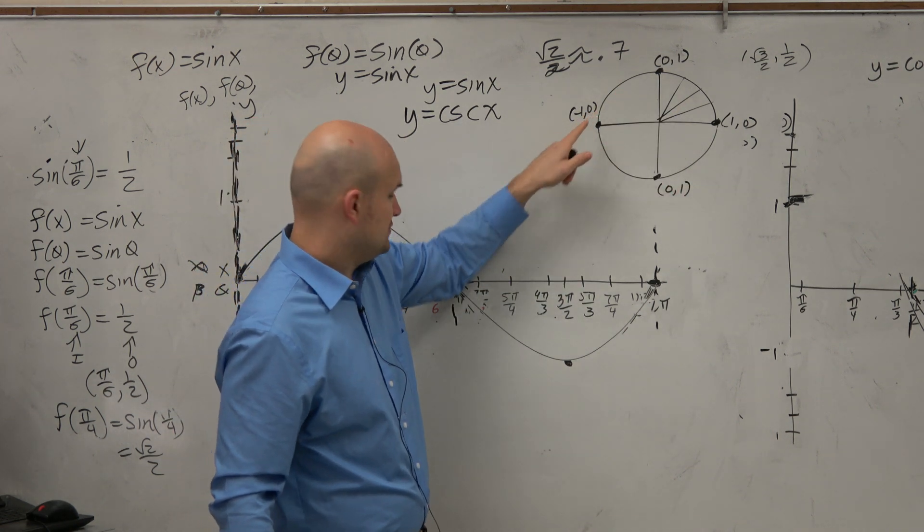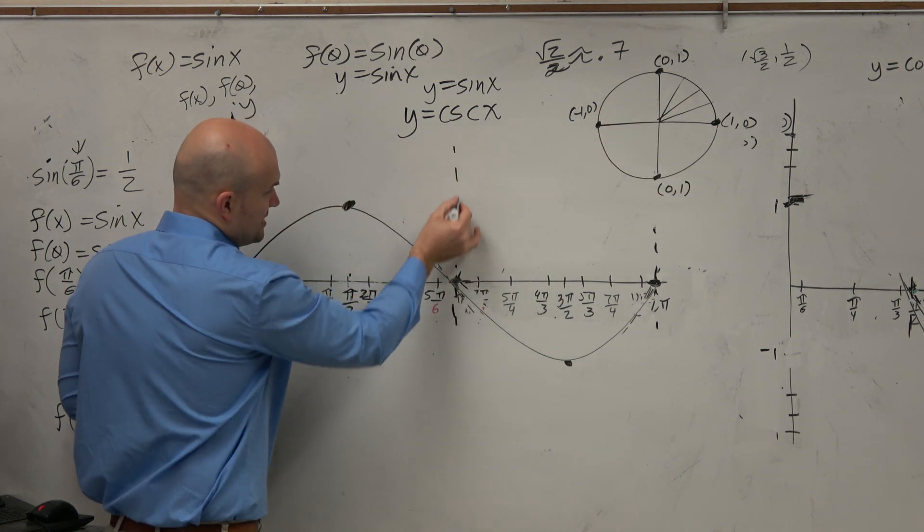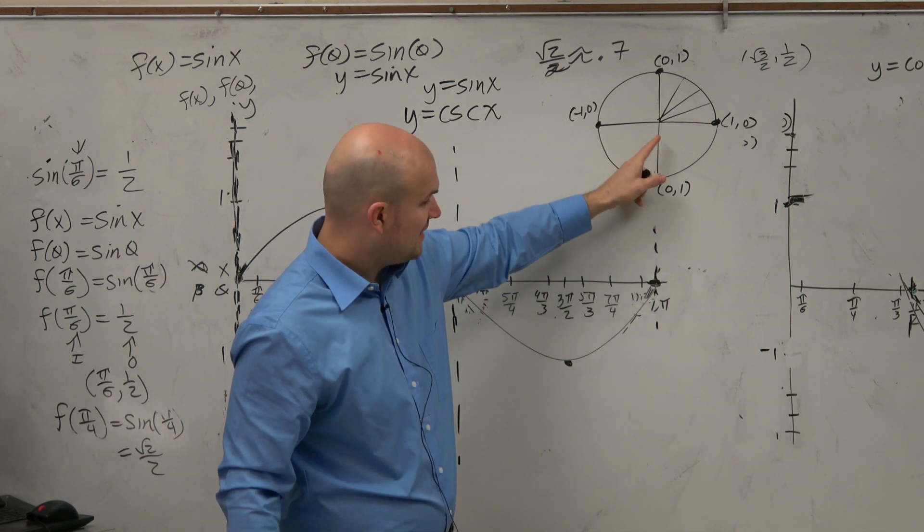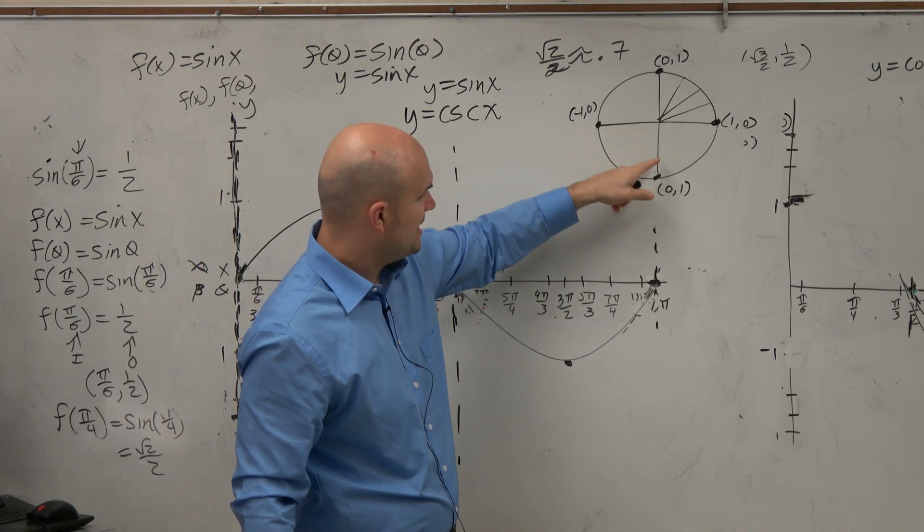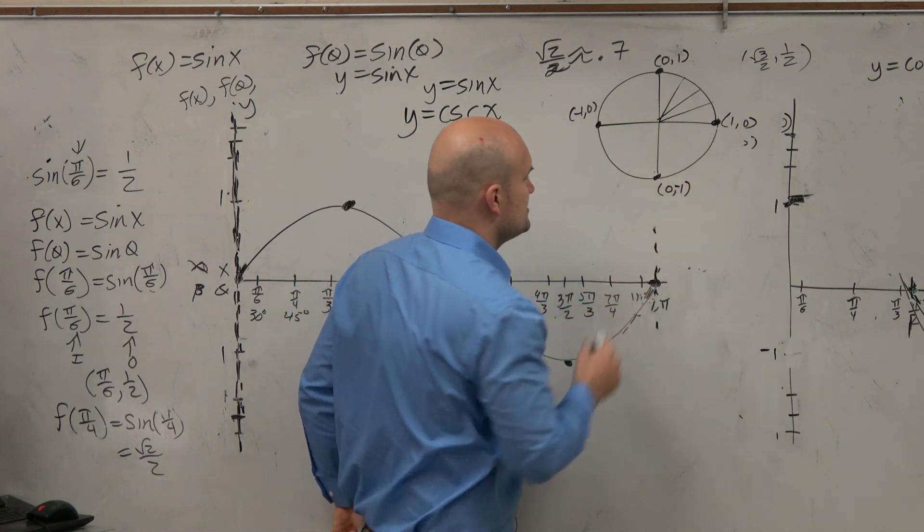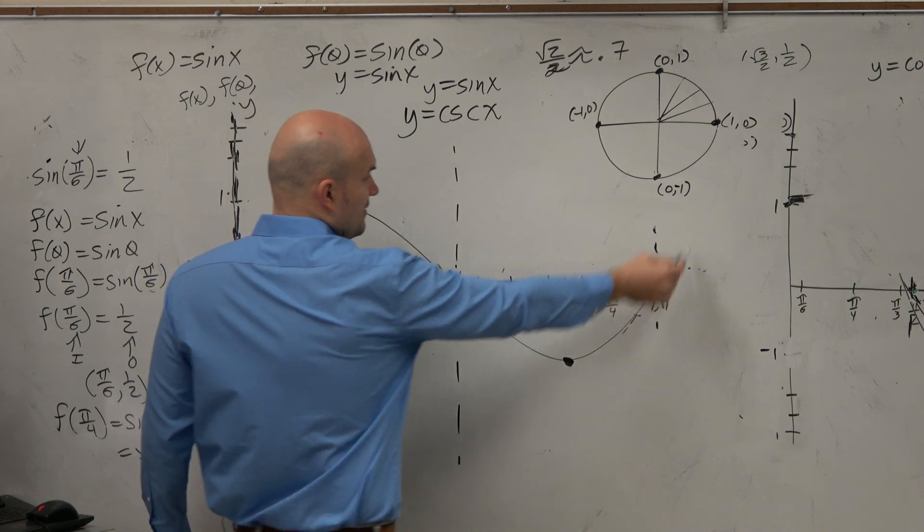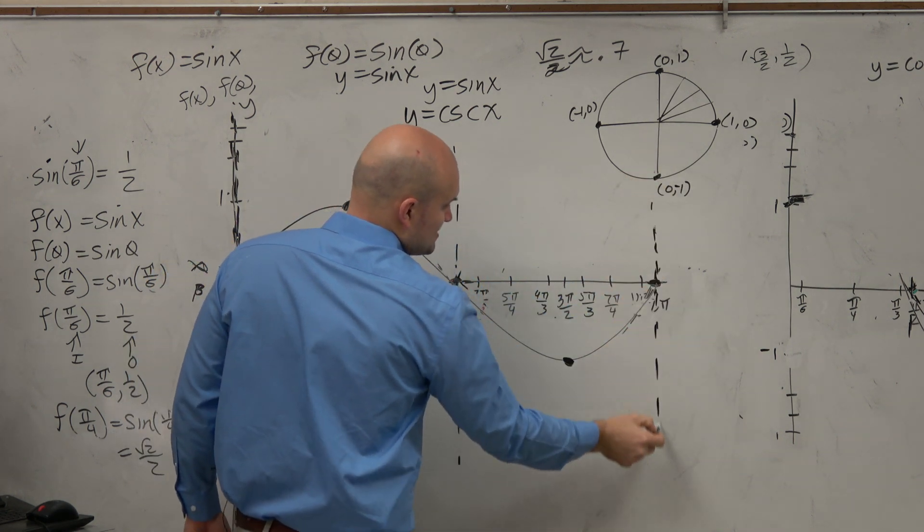At π, we're at 1 over 0, so we can see that this is a vertical asymptote. At 3π/2, we're at negative 1. So we have a point at negative 1. And then at 2π, again, we have a nice asymptote.